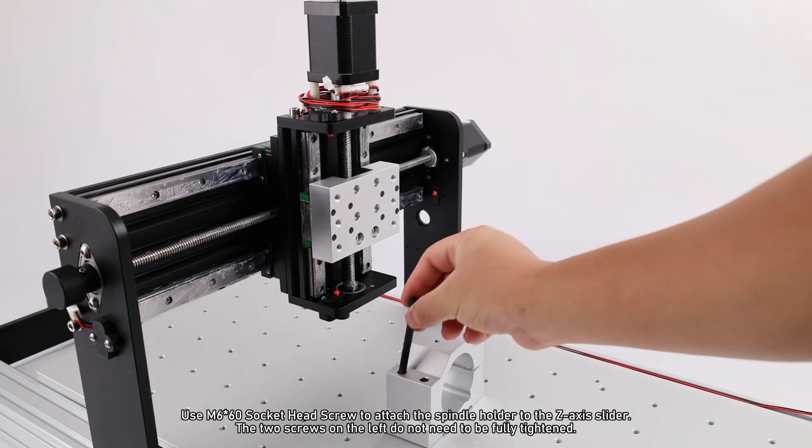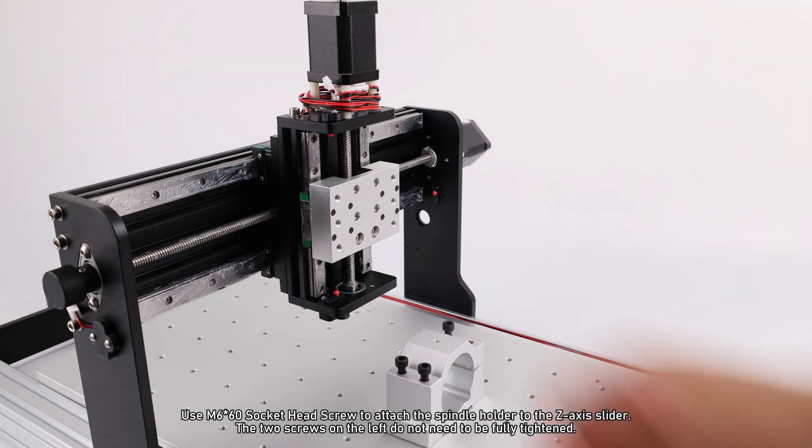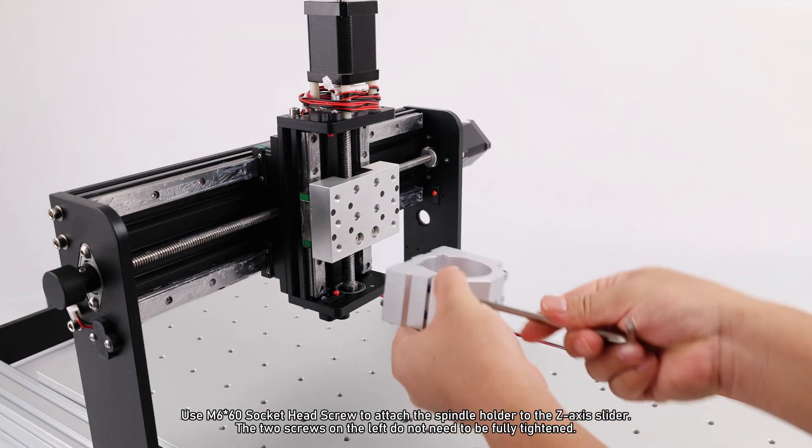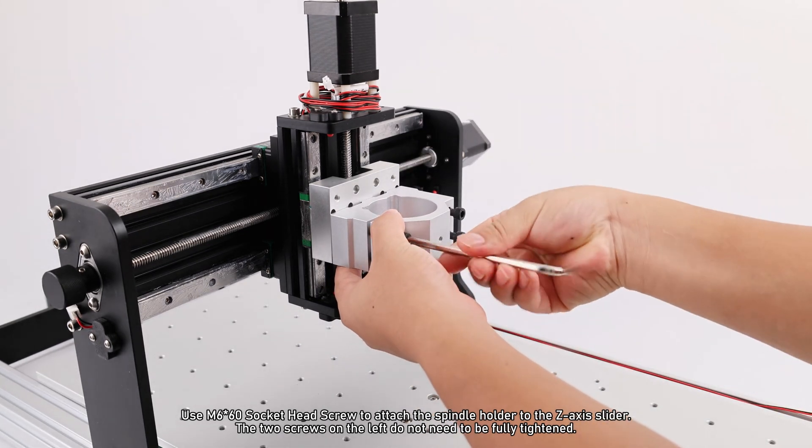Use M6×60 socket head screw to attach the spindle holder to the Z axis stepper. The two screws on the left do not need to be fully tightened.